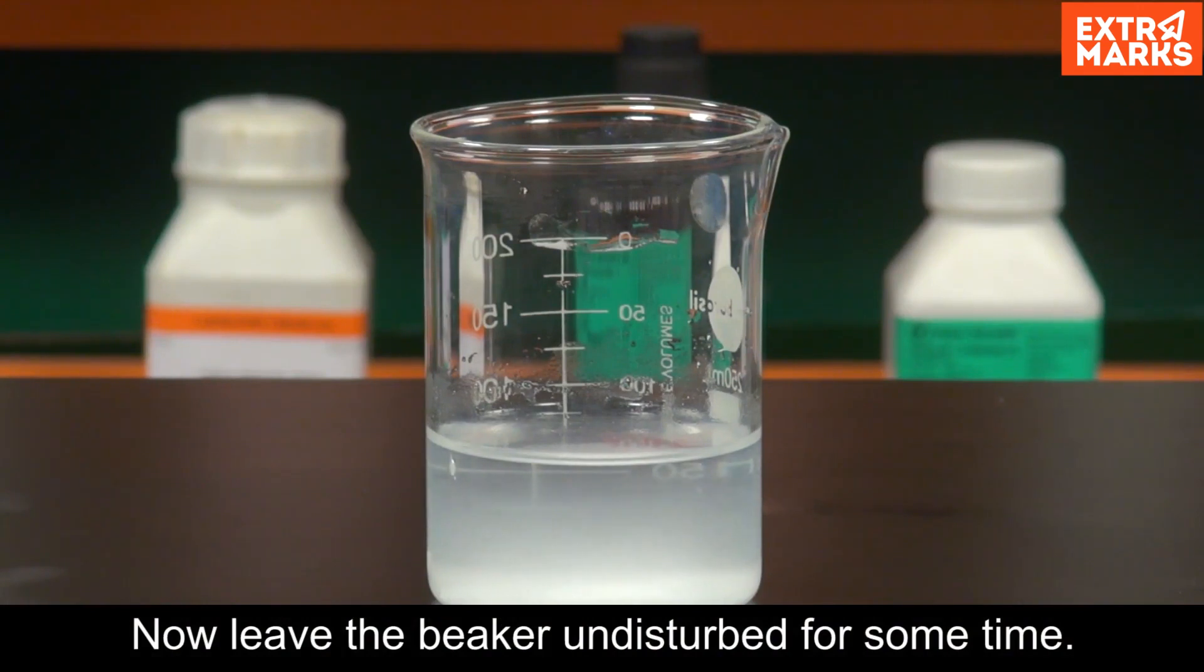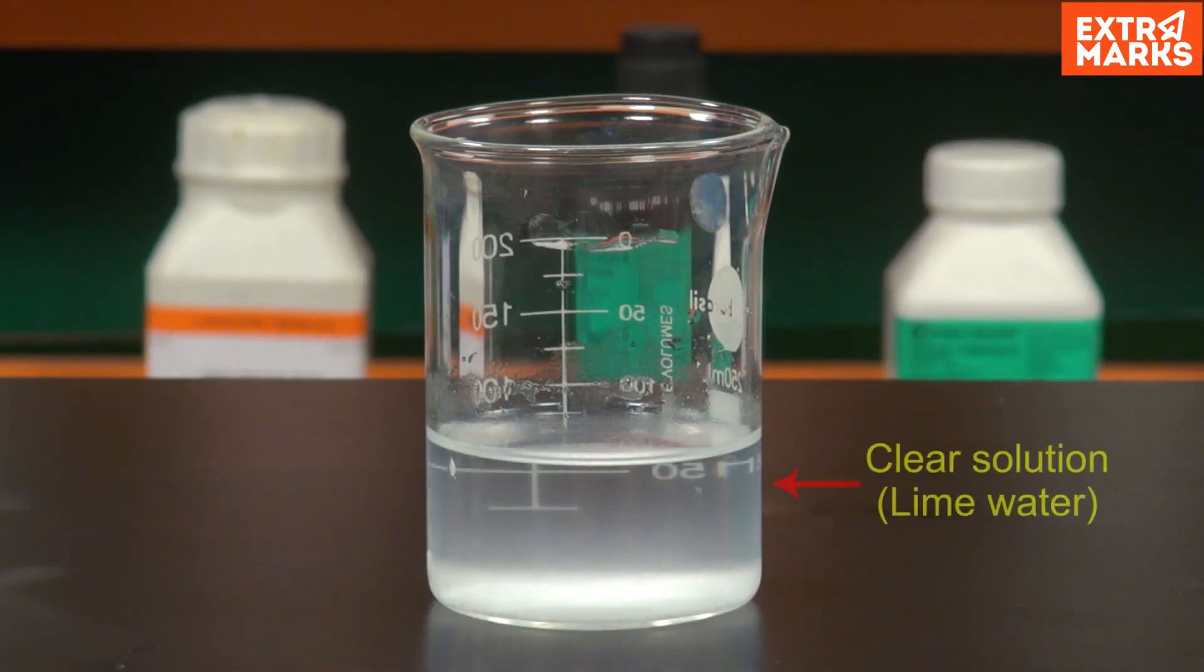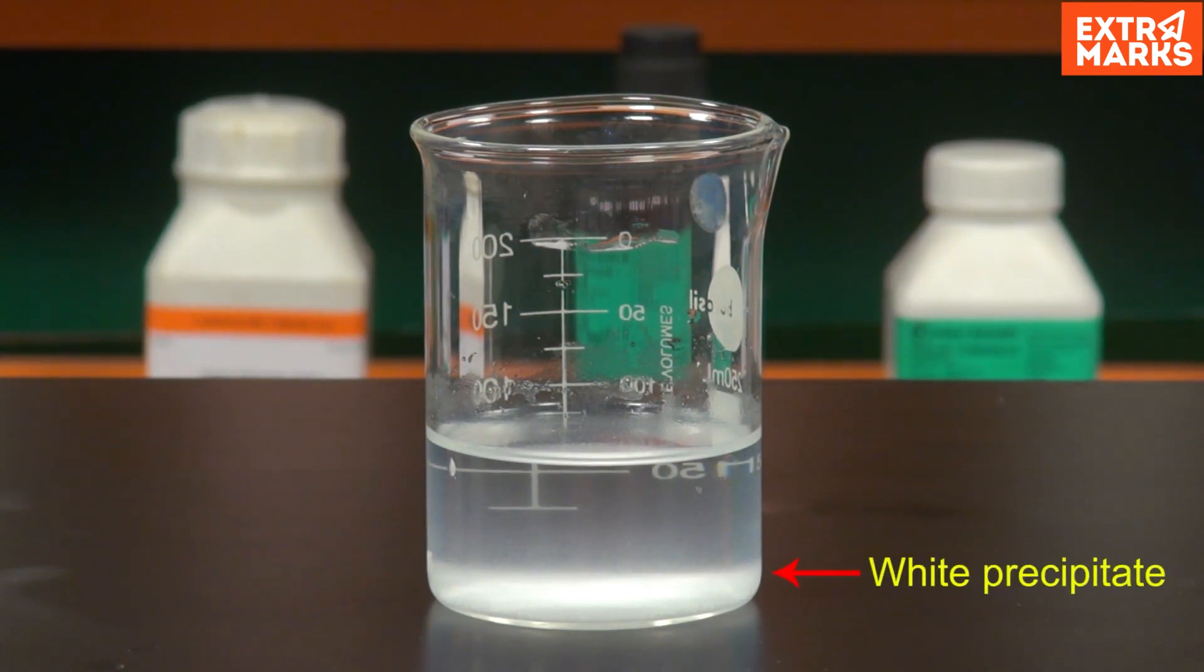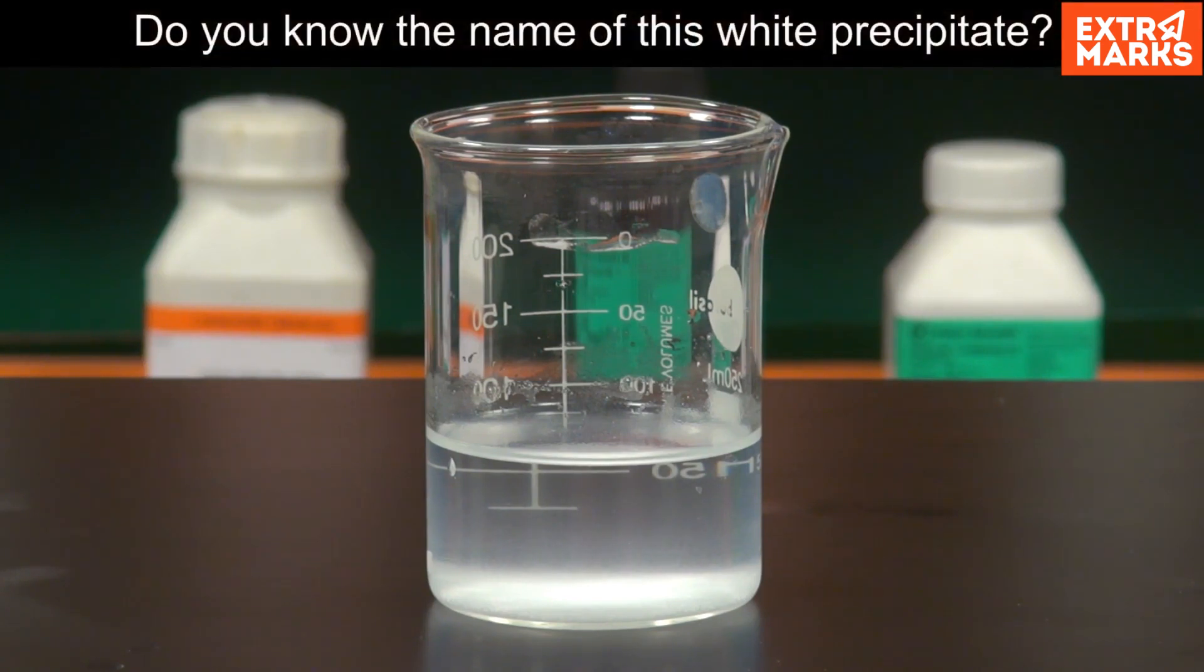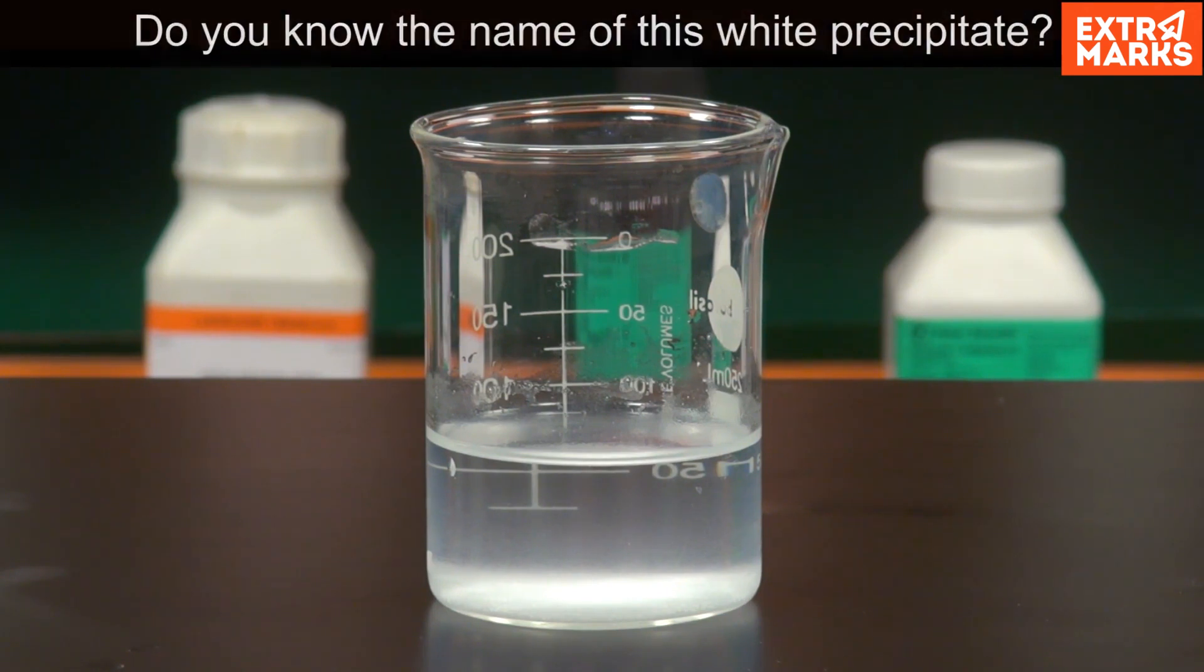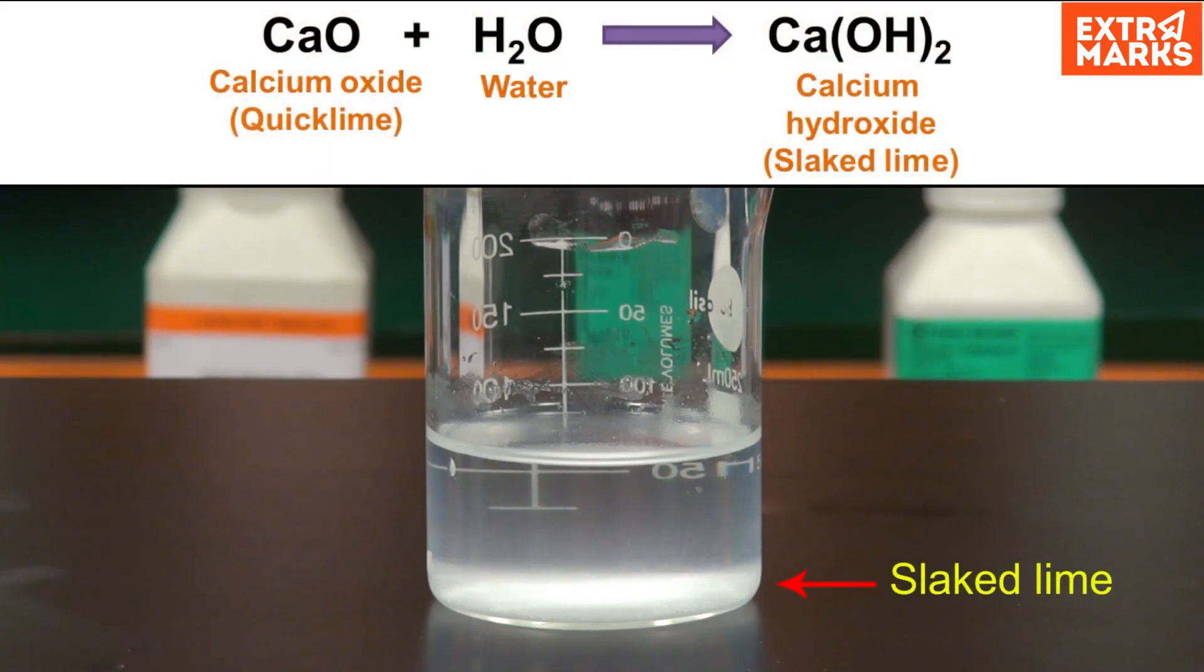Now leave the beaker undisturbed for some time. You will notice a clear solution of lime water as the white precipitate settles down at the bottom of the beaker. Do you know the name of this white precipitate? It is slaked lime.